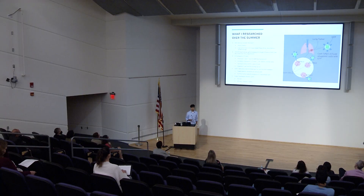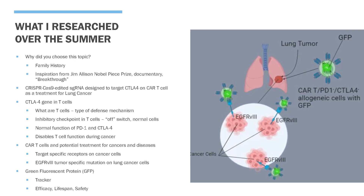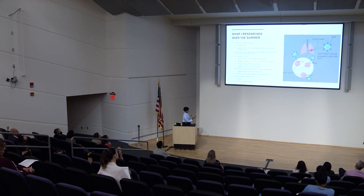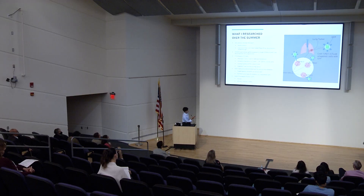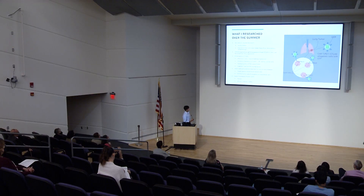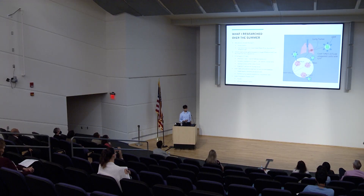This is why I researched CAR T-cells. CAR T-cells are T-cells edited to have a receptor programmed to target a specific region on a cancer cell. In this diagram, EGFRV3 is a tumor-specific mutation acting as a receptor on the cancer cell, and the CAR T-cell goes into the lungs and its receptor recognizes and attacks the EGFRV3 receptor. I also used green fluorescent protein (GFP) as a tracker protein to track the efficacy, lifespan, and safety of these newly edited cells. For future experiments, we plan to compare these results to those of normal T-cells.